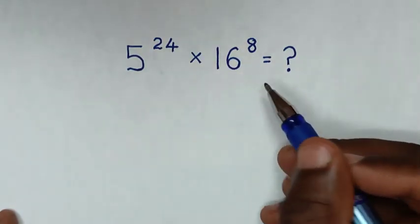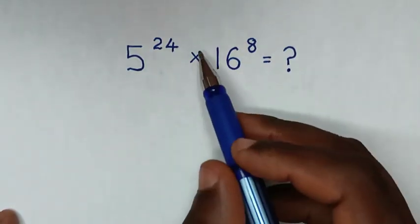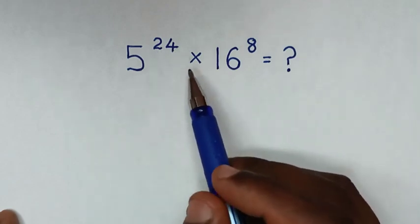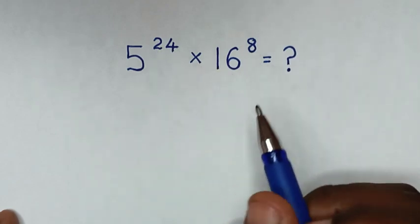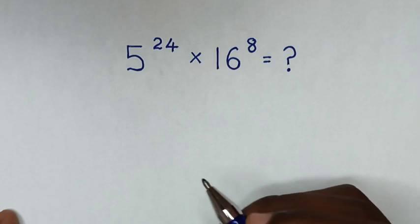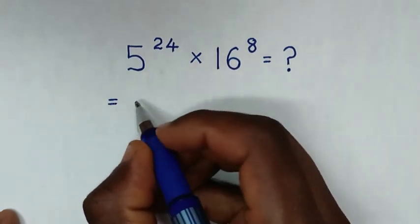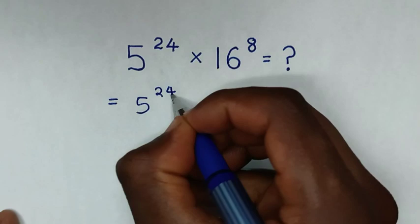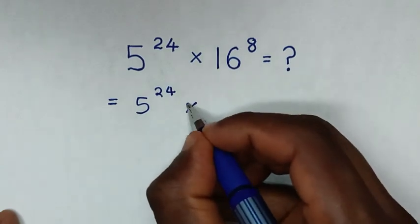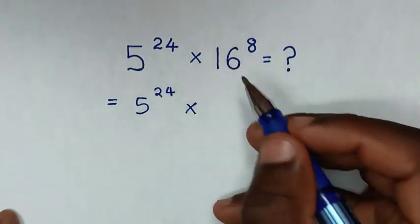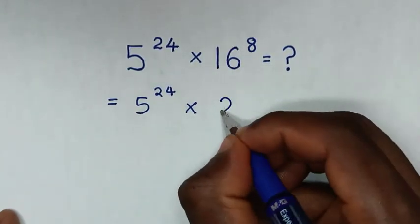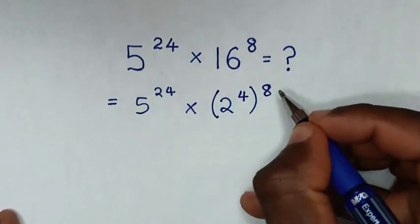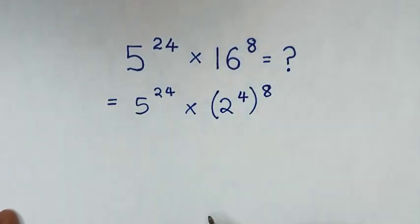Welcome. We will solve this math problem of multiplication of exponents: 5 power of 24 times 16 power of 8. It will be equal to 5 power of 24, times 16 — which is the same as 2 power of 4 — then bracket power of 8.